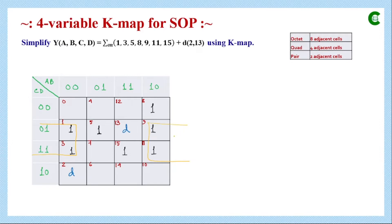We can take two cells and another two cells to form a quad — all four are 1s. Evaluating this quad: A changes value (eliminated), B is 0 so it becomes B', C changes value (eliminated), and D is 1 so it stays D. The simplified term for this quad is B'D.